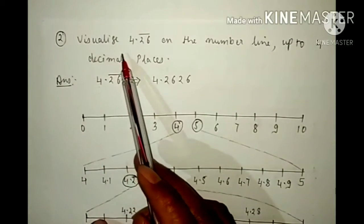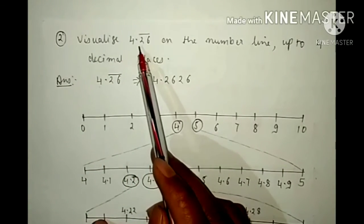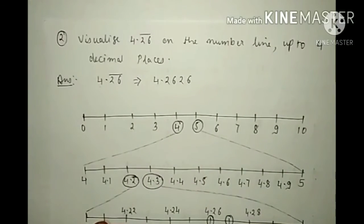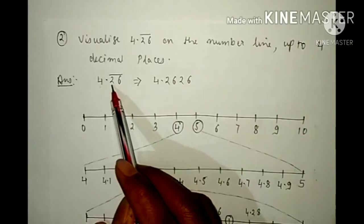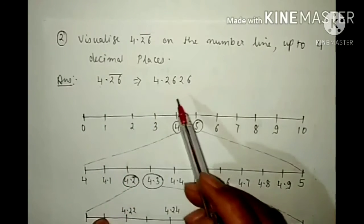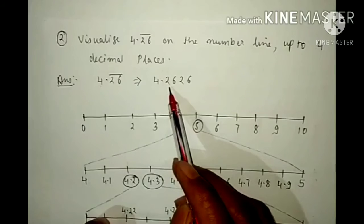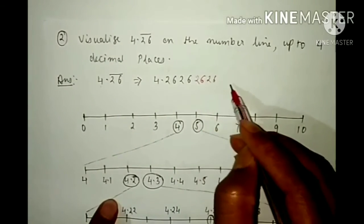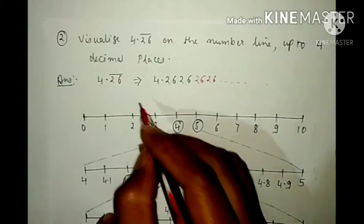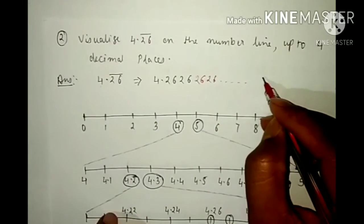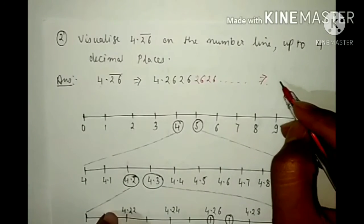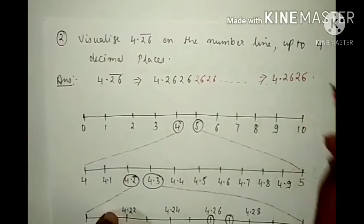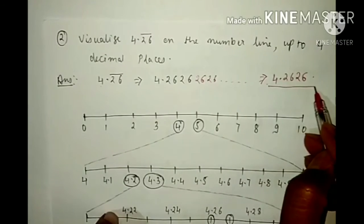Visualize 4.26 bar on the number line up to 4 decimal places. Now 4.26 bar equals 4.2626262626... and this will continue, but we have to write it only till 4 decimal places, so this becomes 4.2626. We have to mark this number on the number line.